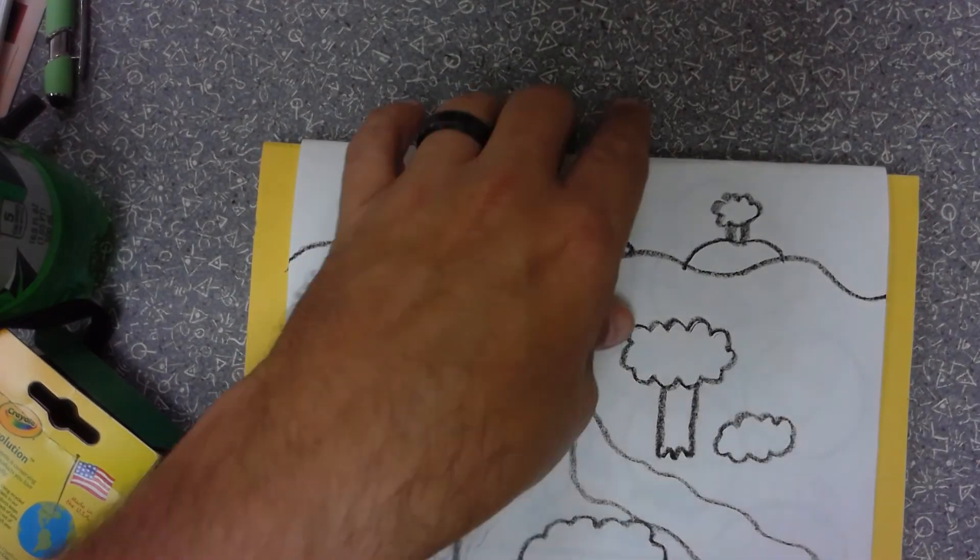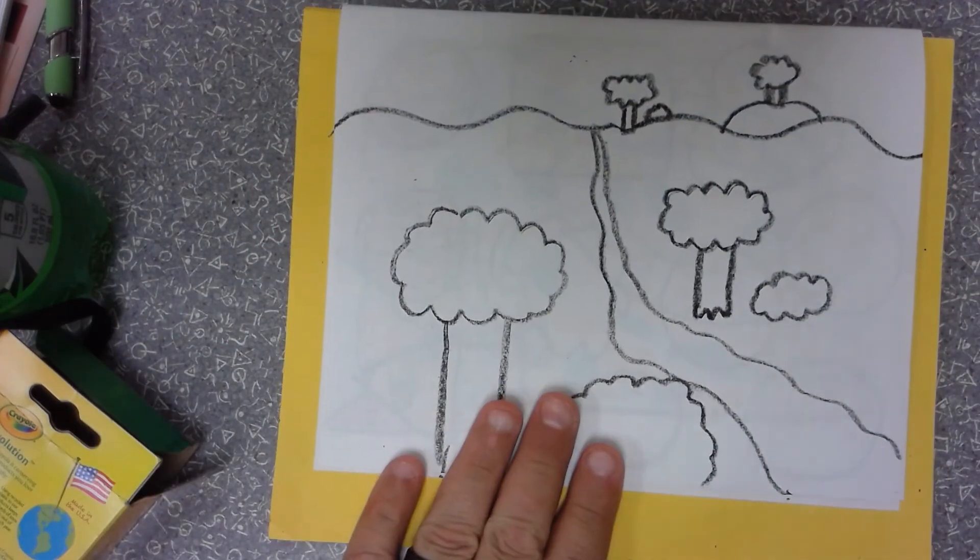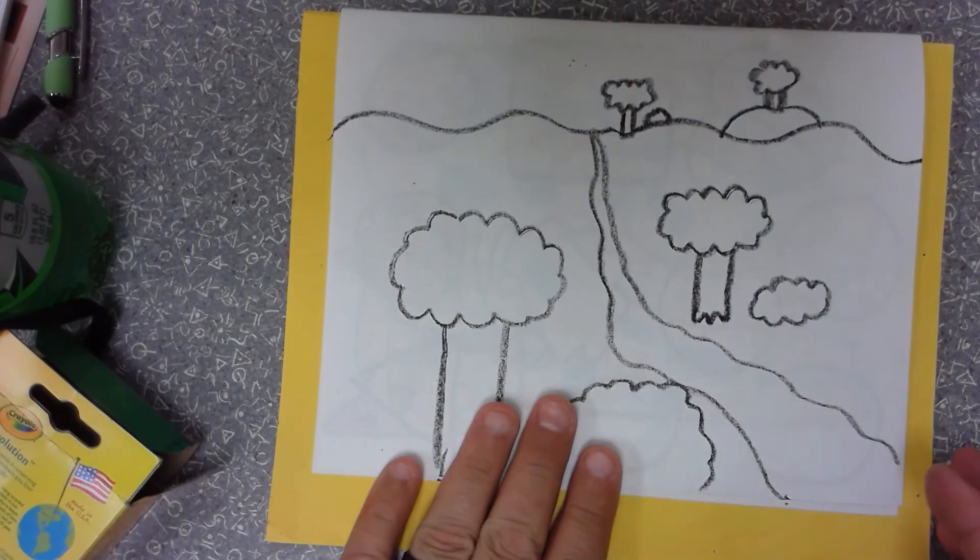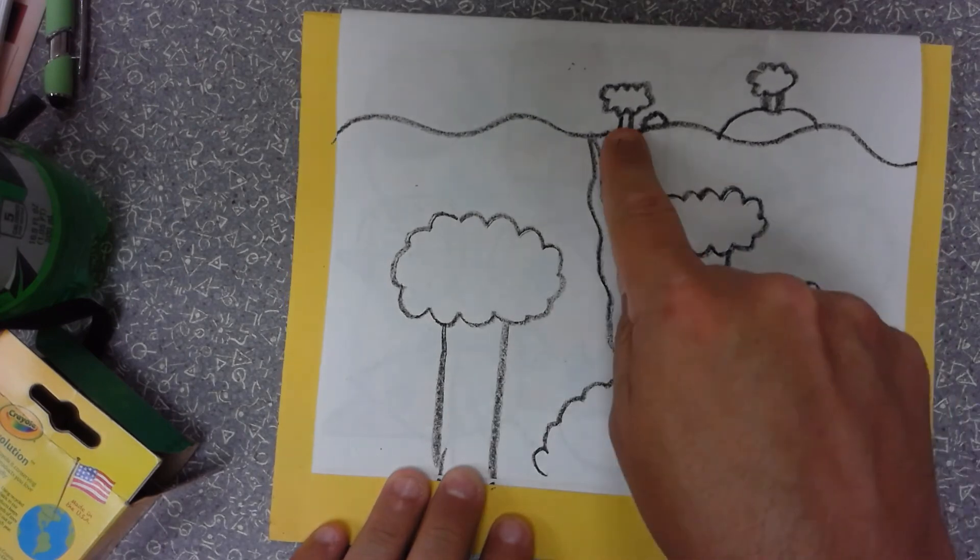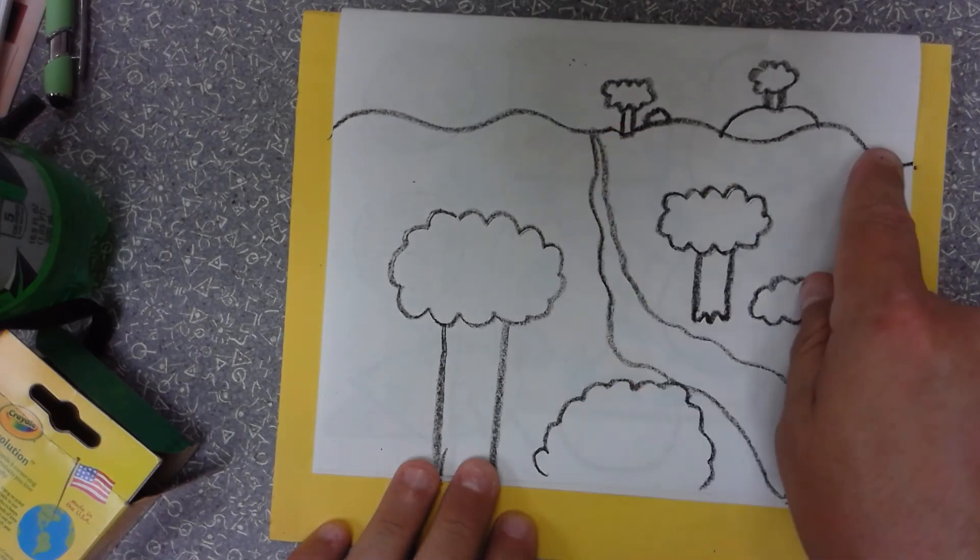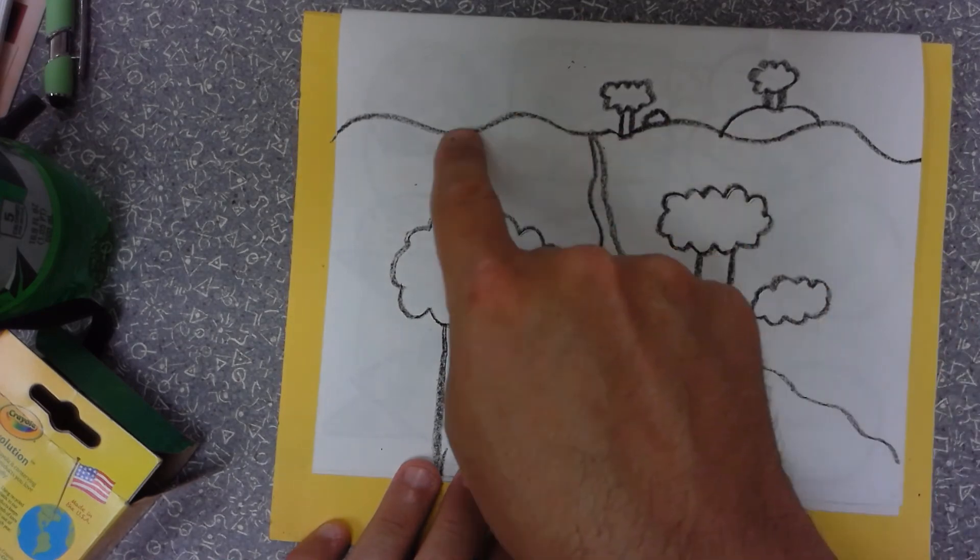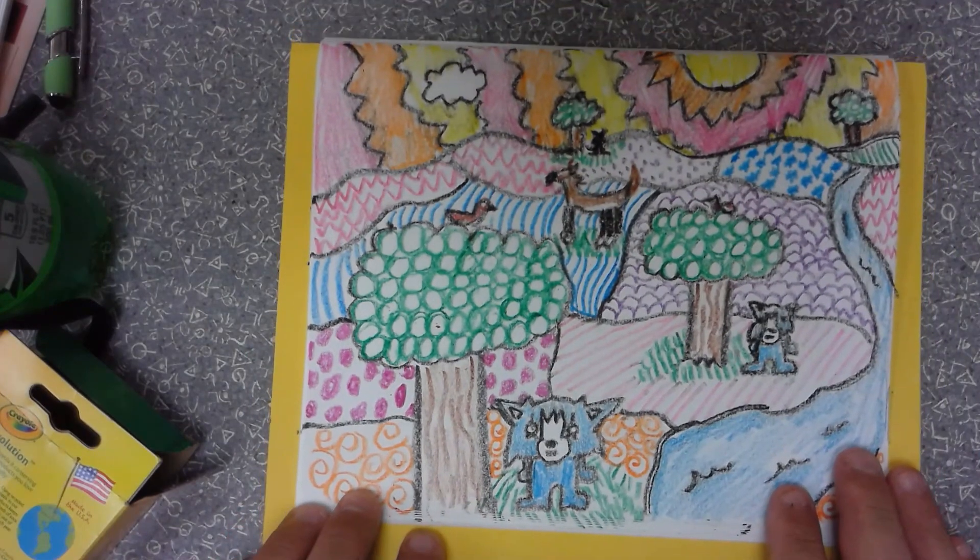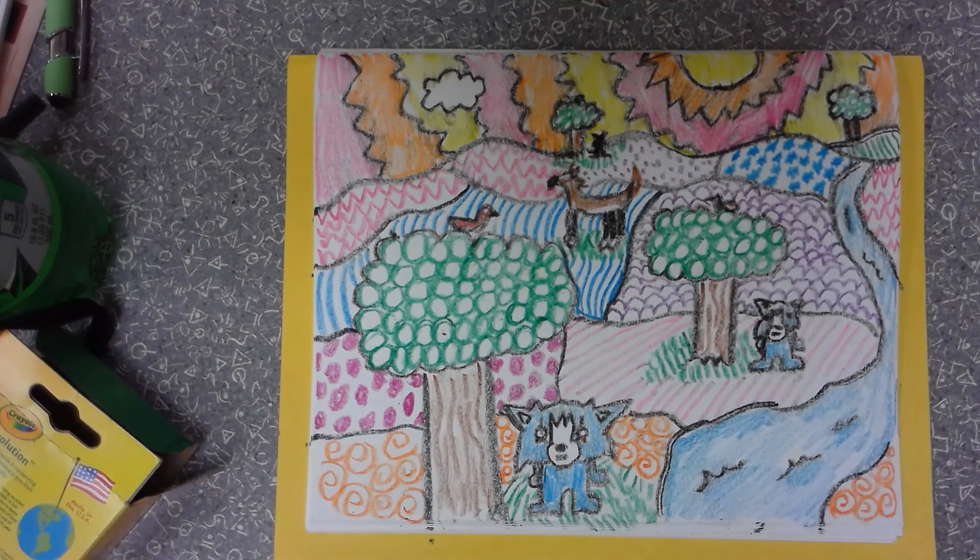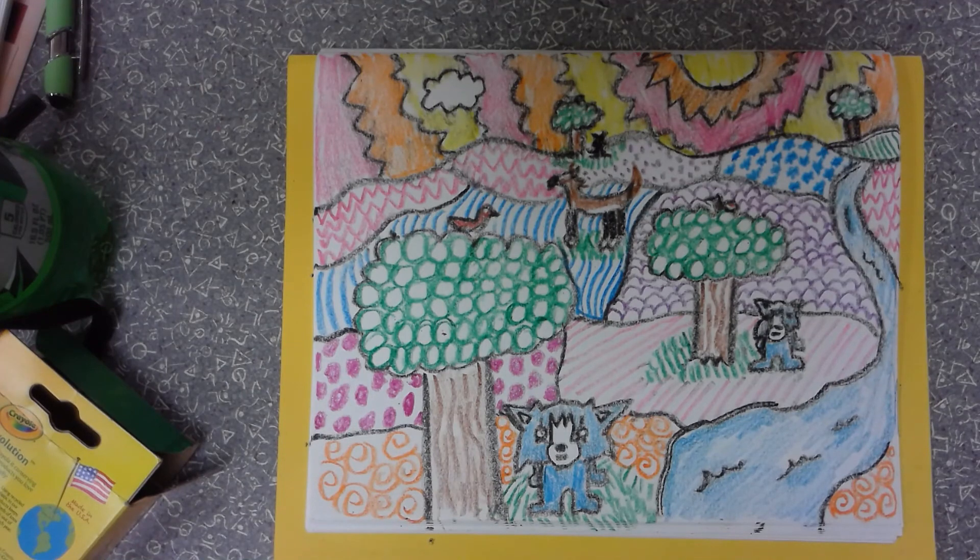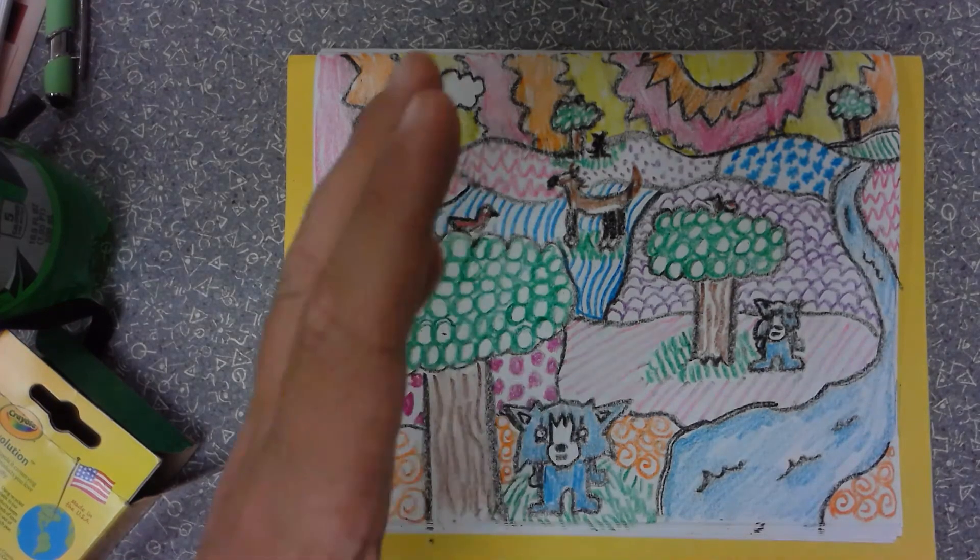That is the landscape. Remember: the front is the foreground, the middle is the middle ground, the back is the background, and the line where the earth meets the sky is the horizon line. Make sure you finish your drawing, add details and color, and then upload it to Schoology under the assignment tab. See you later!